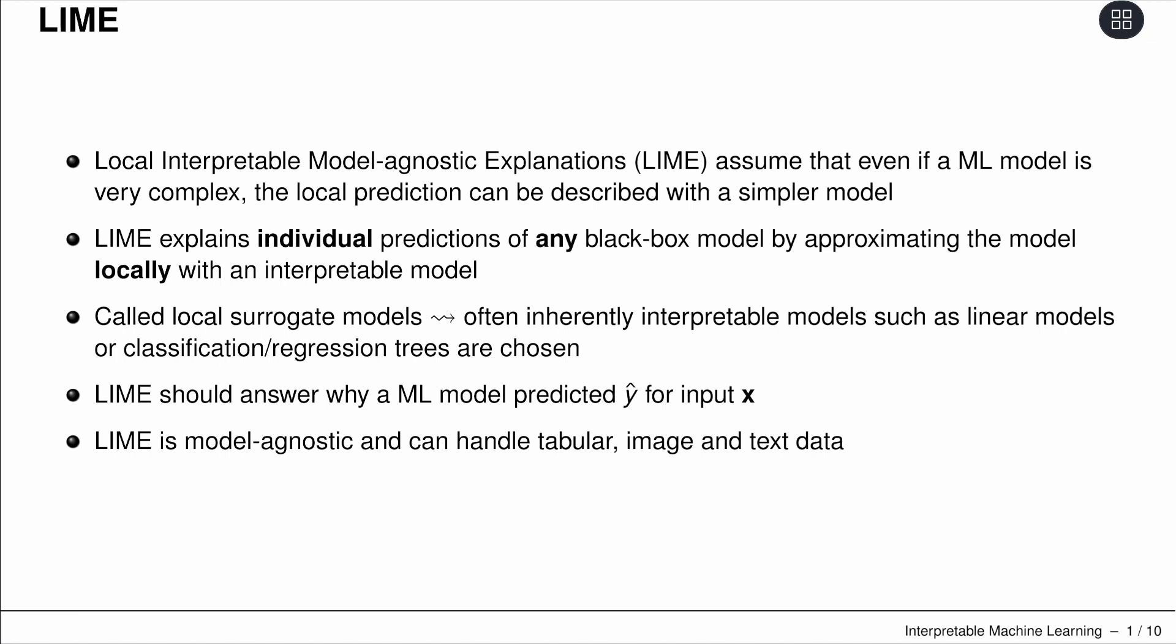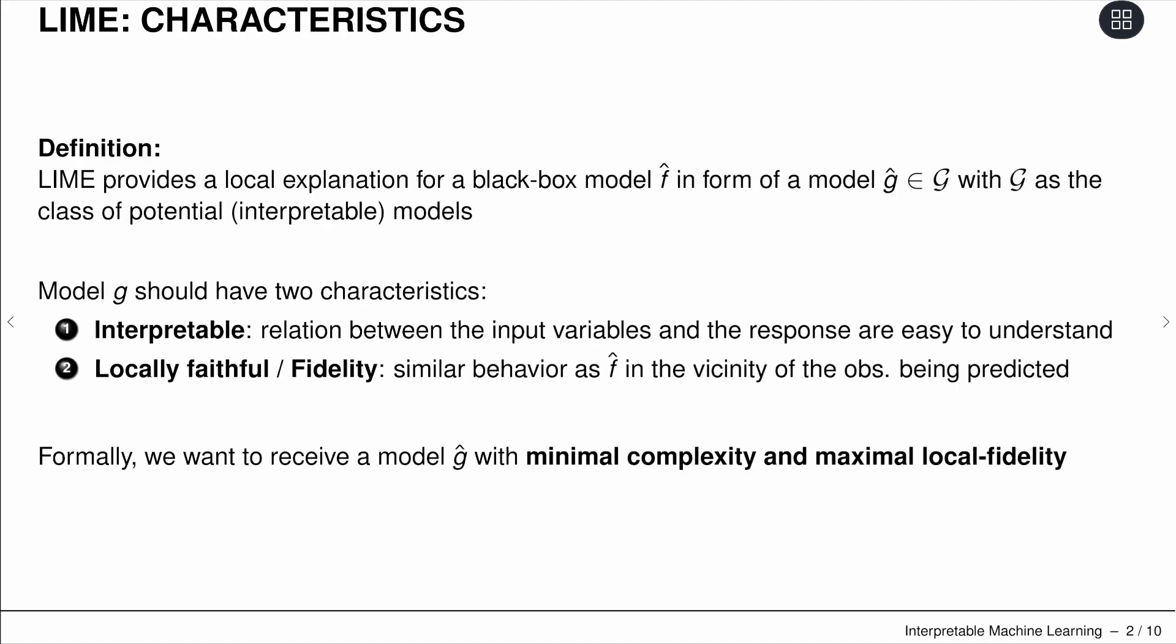We have to check how we actually define the local neighborhood. LIME provides a local explanation for a black box model, let's call it F hat, by generating a new machine learning model, let's call it G hat.